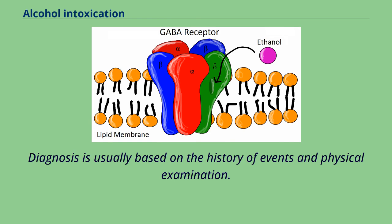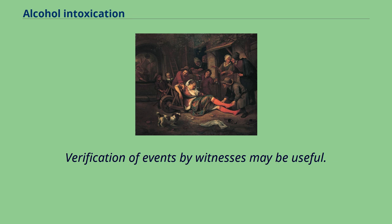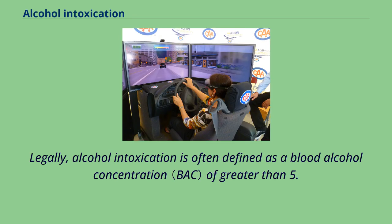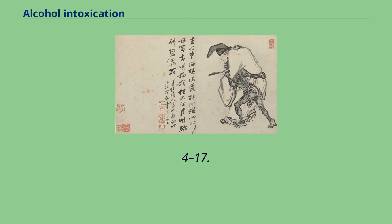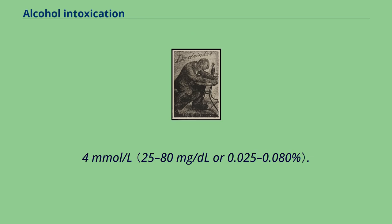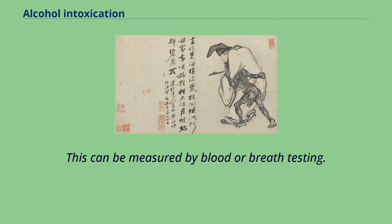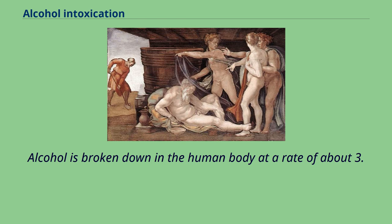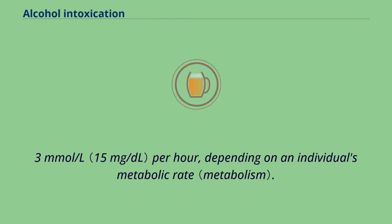Diagnosis is usually based on the history of events and physical examination. Verification of events by witnesses may be useful. Legally, alcohol intoxication is often defined as a blood alcohol concentration of greater than 5.4–17.4 millimoles per liter. This can be measured by blood or breath testing. Alcohol is broken down in the human body at a rate of about 3.3 millimoles per liter per hour, depending on an individual's metabolic rate.